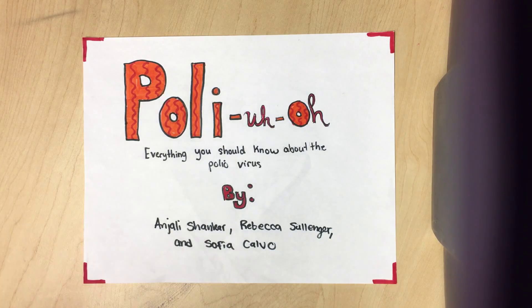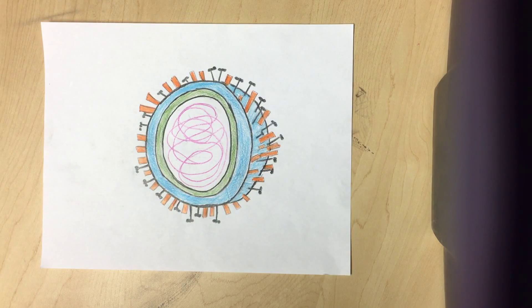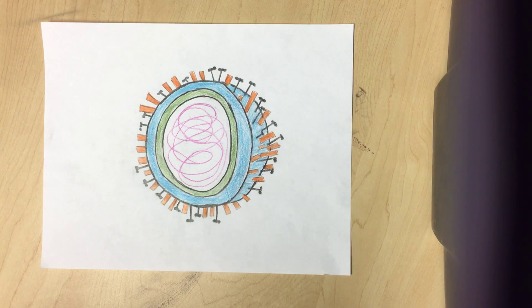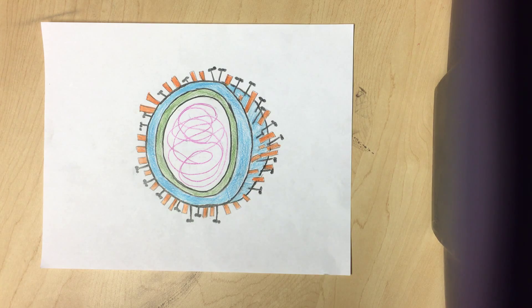Polio: everything you should know about the polio virus. Presentation by Anjali Shanker, Rebecca Sollinger, and Sophia Calvo. Poliomyelitis is caused by a virus in the family Picornaviridae and subgroup Enterovirus. The polio virus has a positive-stranded RNA genome. The virus is naked and lacks a lipid envelope. The polio virus forms a provirus — a virus that integrates its genome into the DNA of the host cell — meaning it can exist for many years within a host without causing any noticeable symptoms.